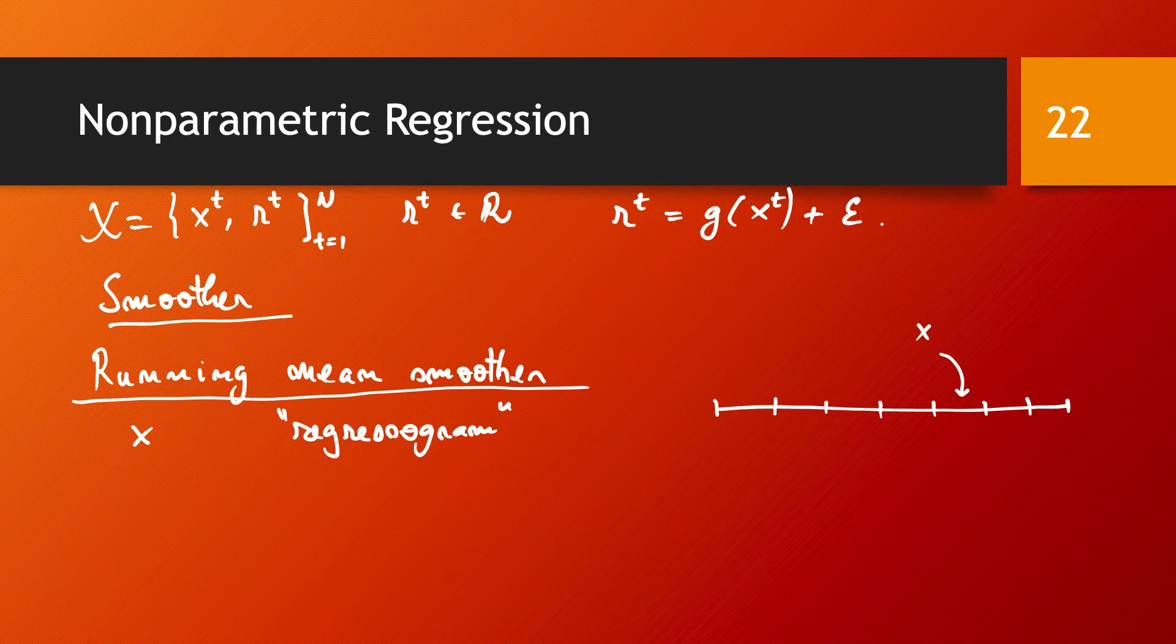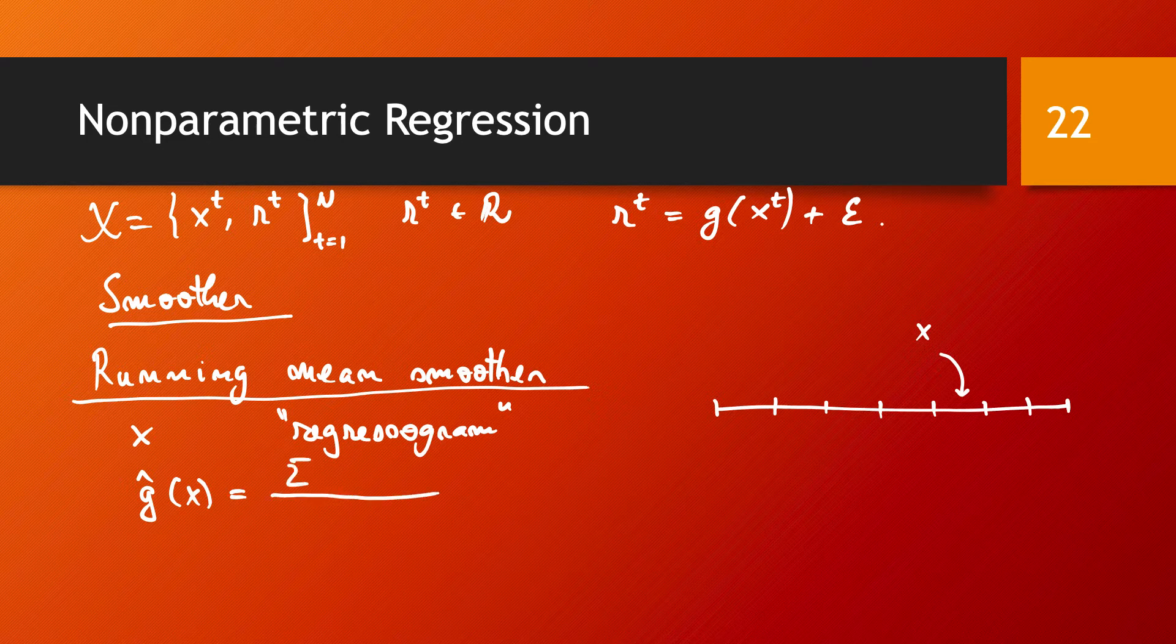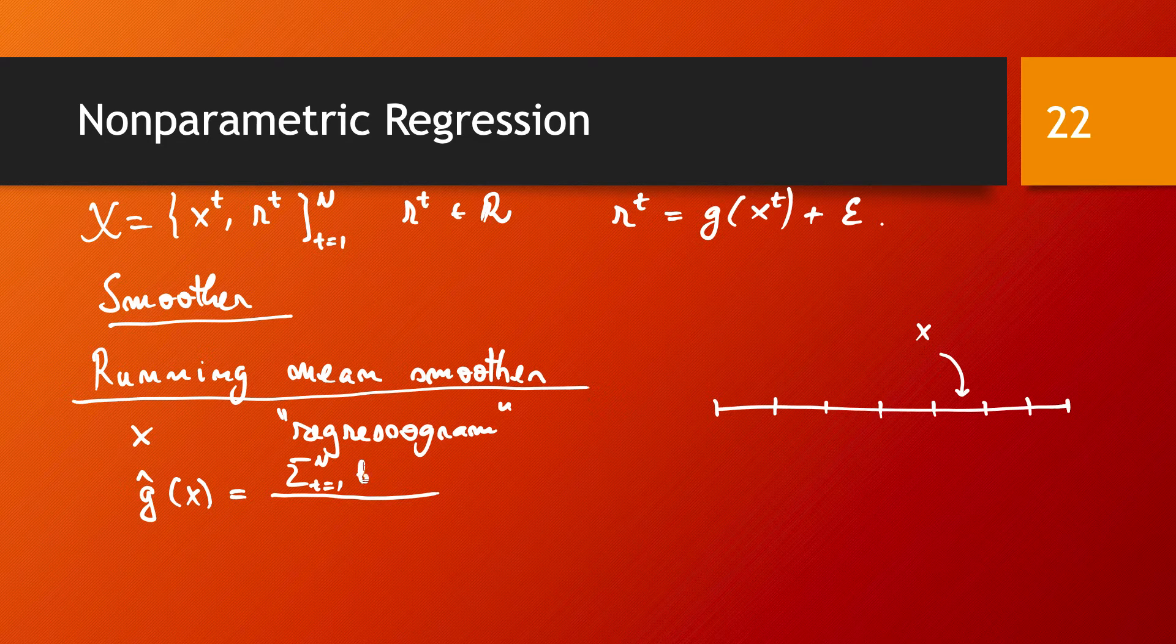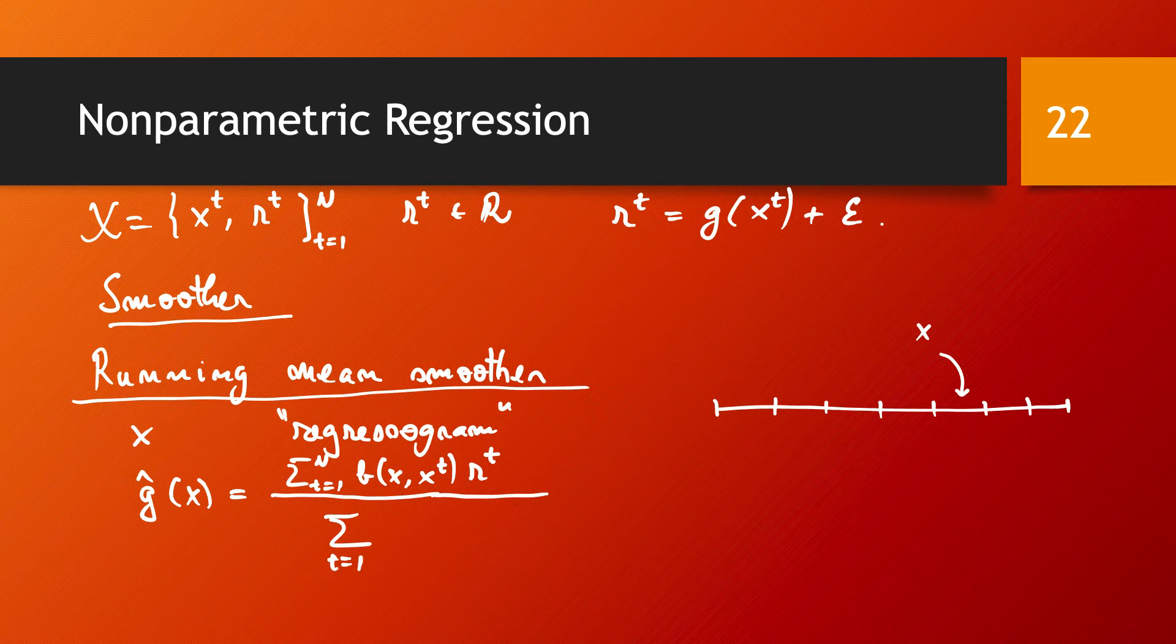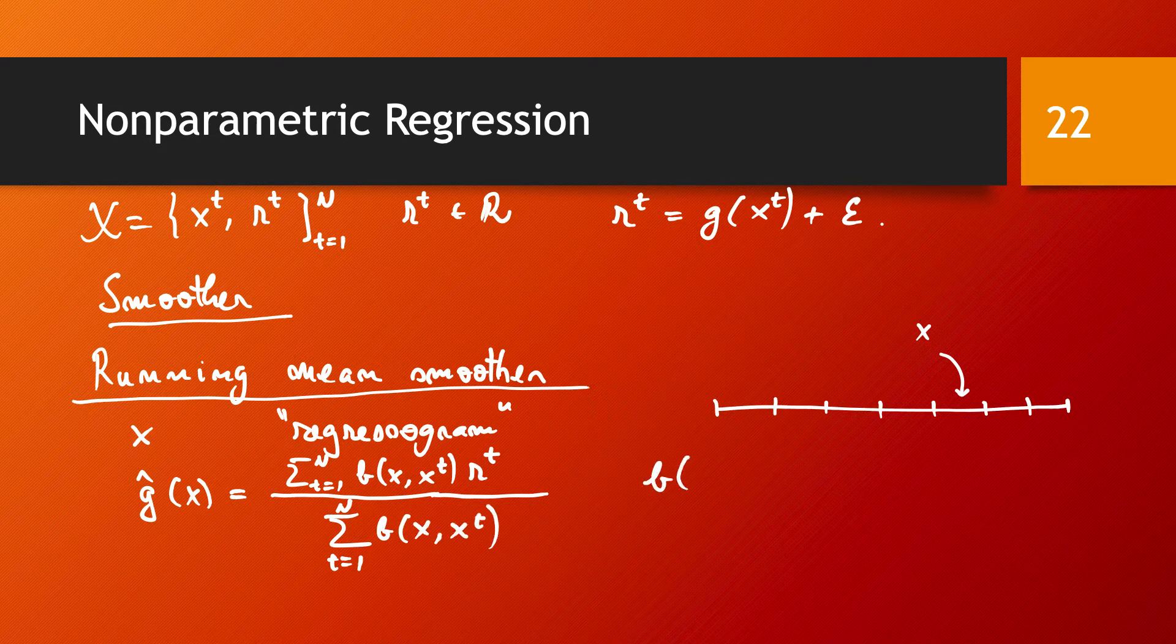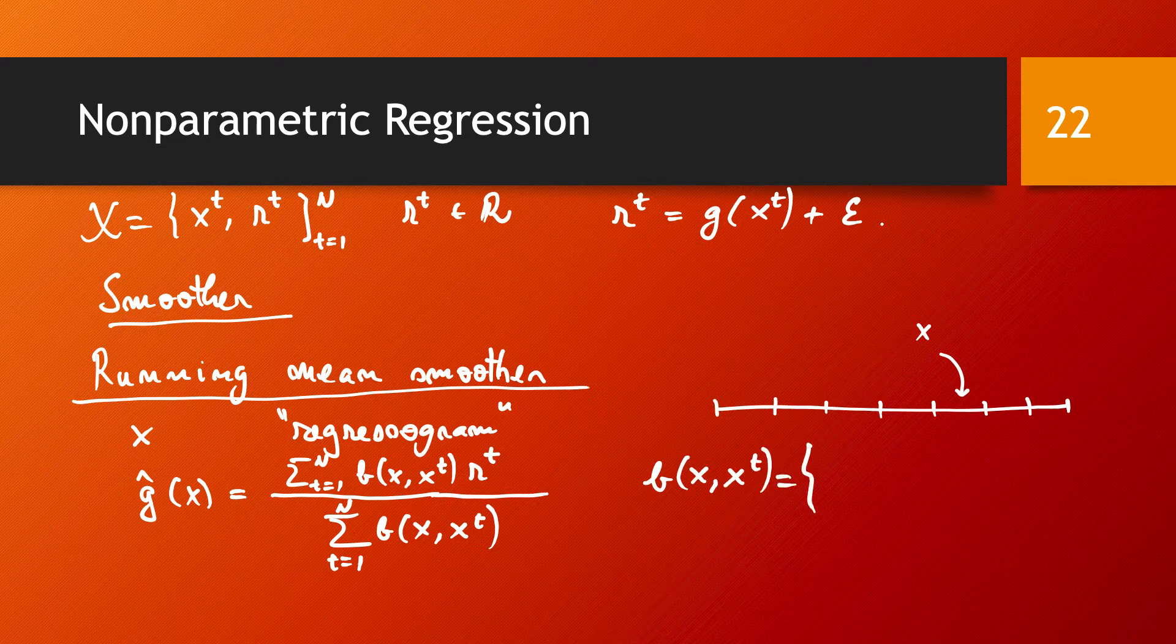The estimator G hat of X is going to be the sum for all the data points of B of X and XT times the value RT divided by the sum of B of X and XT. The idea of this B function is simply going to be 1 if XT is in the same bin with X.